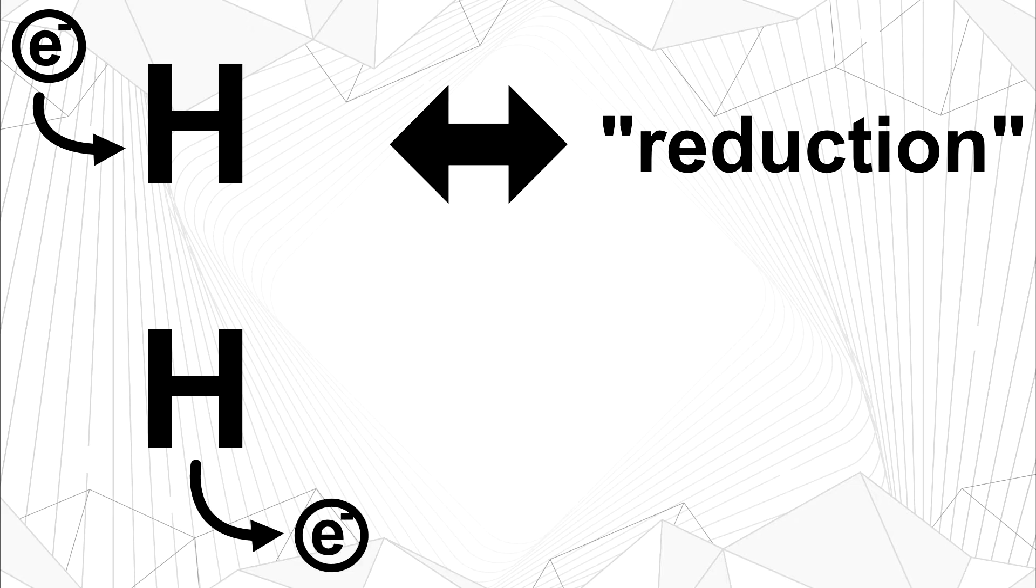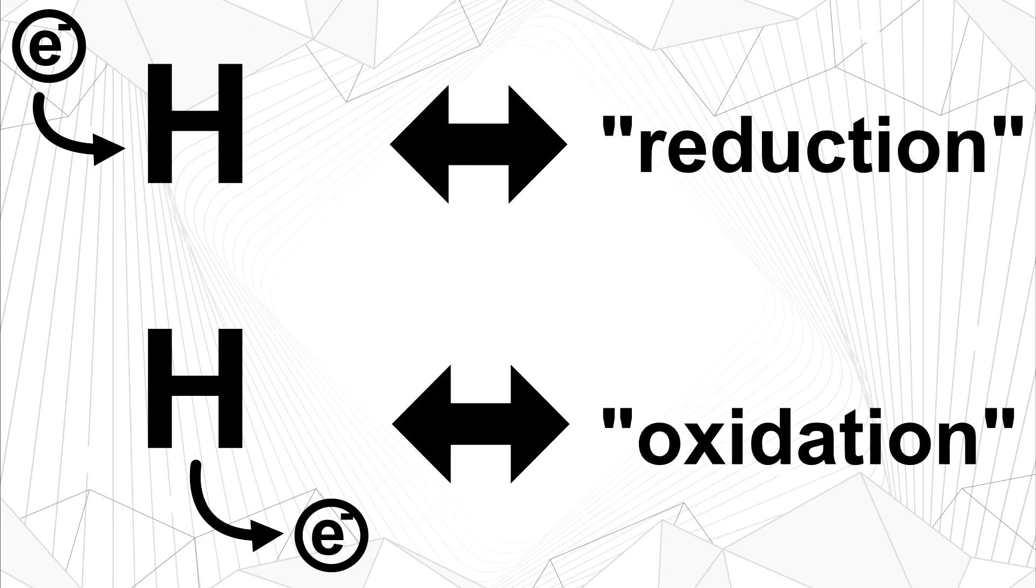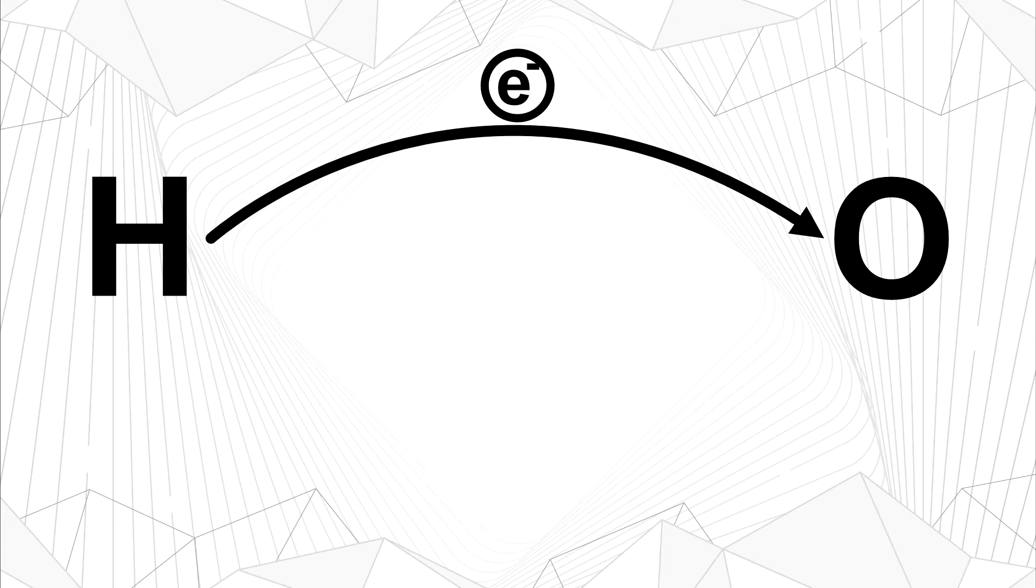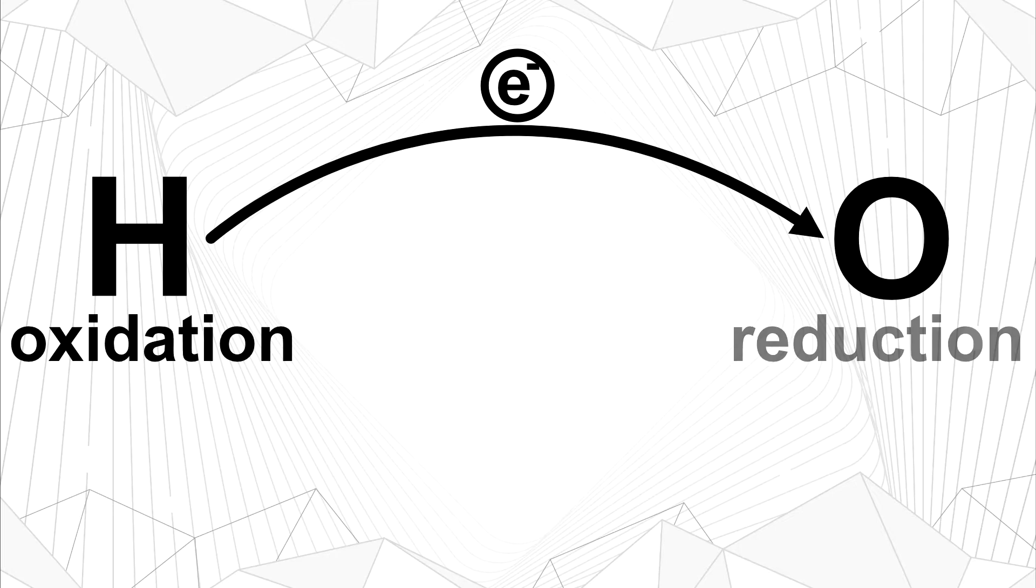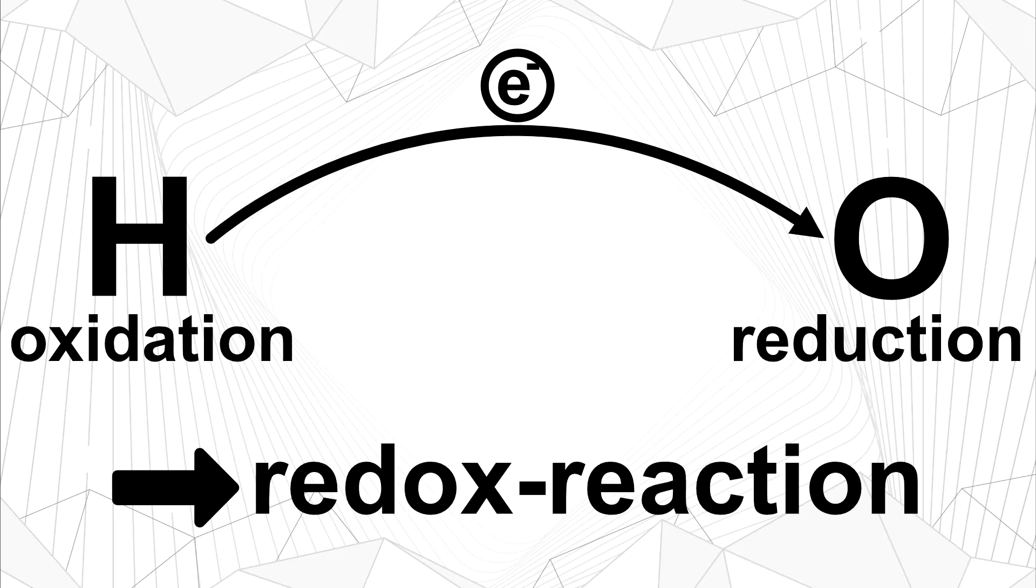If an atom receives new electrons, this is called a reduction reaction, while the opposite is called an oxidation reaction. If we transfer electrons from one atom into another one, this process incorporates both an oxidation and a reduction reaction, and the whole process is referred to as a redox reaction.